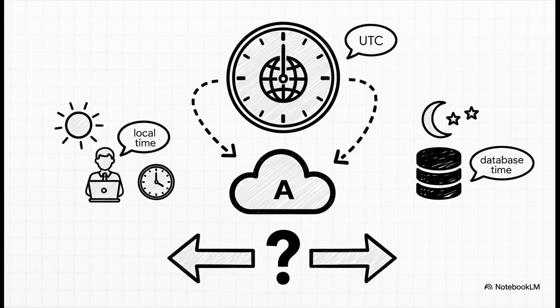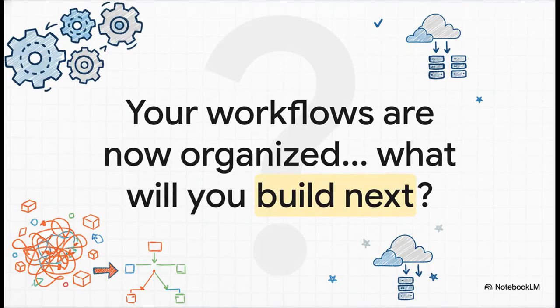Finally, this is the one tip that trips up everybody when starting out: Airflow lives and breathes UTC, always. If you're setting a schedule based on your local time, your jobs are going to run at the wrong time — you have to be super explicit with your time zones. So there you have it. We've gone from that tangled mess of scripts to a workflow that's organized, reliable, and you can actually see what's going on. You've now got the tools to take control of that chaos. So the only question left is — what are you going to build next?